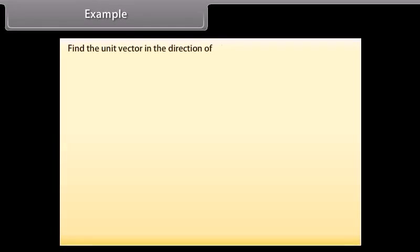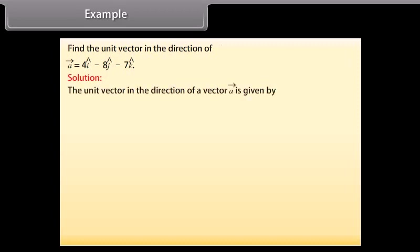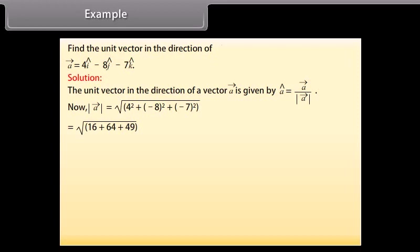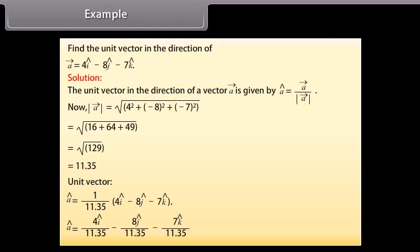Example: Find the unit vector in the direction of vector A equals 4 cap I minus 8 cap J minus 7 cap K. Solution: The unit vector is cap A equals vector A divided by the modulus of vector A. The modulus of vector A equals square root of 4 squared plus (−8) squared plus (−7) squared equals square root of 16 plus 64 plus 49 equals square root of 129 equals 11.35. Therefore, unit vector cap A equals (1/11.35) times (4 cap I minus 8 cap J minus 7 cap K), which equals 4 cap I by 11.35 minus 8 cap J by 11.35 minus 7 cap K by 11.35.